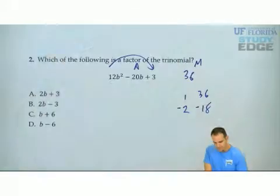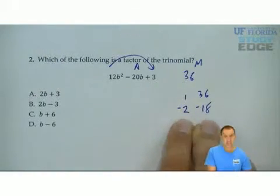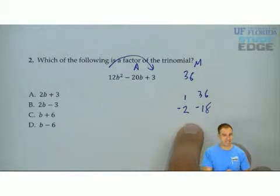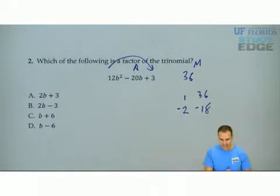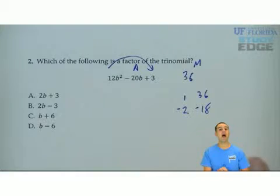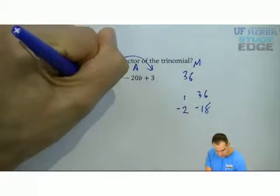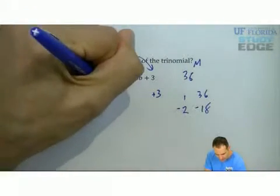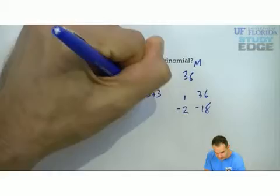2 and 18. If I do a minus and a minus, negative 2 times negative 18 will add to negative 20. Negative 2 plus negative 18 will add to 36. We're good. 12b squared plus 3. Bring the outside down. Negative 2b minus 18b.